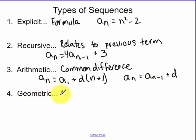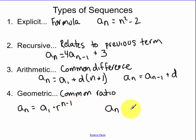Geometric. They have a common ratio. So you're multiplying to get to the next term. So my Nth term, I take my first term, multiply it by my common ratio to the N minus 1.